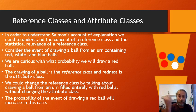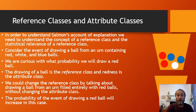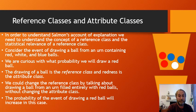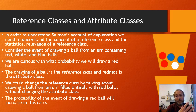We can change the reference class by specifying which urn we draw from. If we draw from the urn filled entirely with red balls, the attribute class — redness — stays the same, but the probability changes from two-in-five to one hundred percent. So changing the reference class for the same event changes the probability.